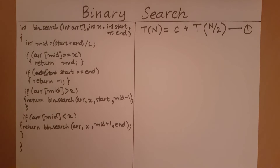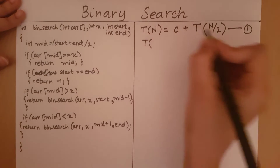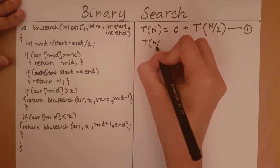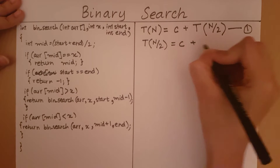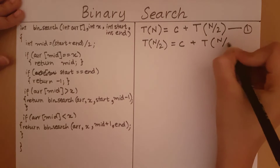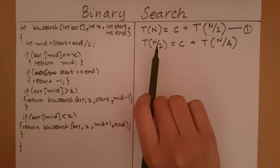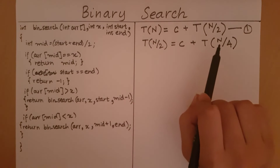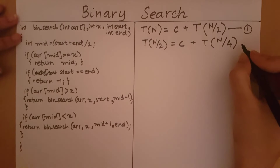This formula holds for all n, including n/2. Using the rule set in formula 1, we can say that T(n/2) = c + T(n/4), where we have substituted n with n/2 and n/2 divided by 2 is n/4. Let's call this formula number 2.